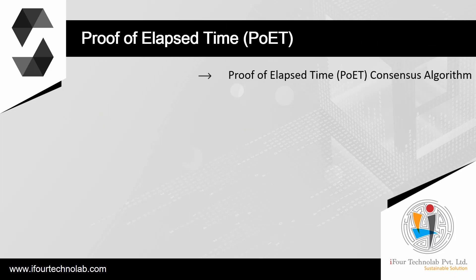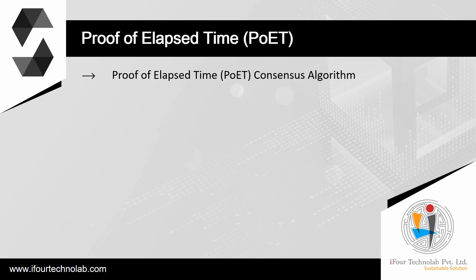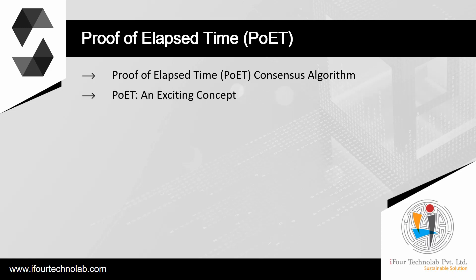Proof of elapsed time is a consensus algorithm developed by Intel, a leading microchip manufacturer, working on its proprietary consensus protocol. The new standard is an integral component of the Hyperledger Sawtooth blockchain framework and is used to provide enclave functionality in Intel's Software Guard Extensions. The primary goal of the proof-of-elapsed time protocol is to maximize the utilization of resources while facilitating the efficient consumption of energy resources. Moreover, this standard leverages a fair lottery system to ensure the continued efficiency of the entire process.